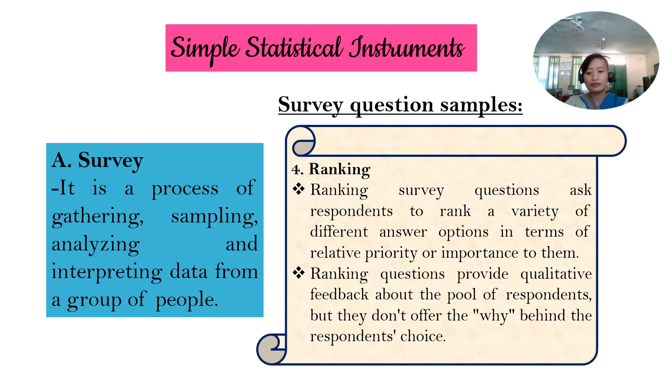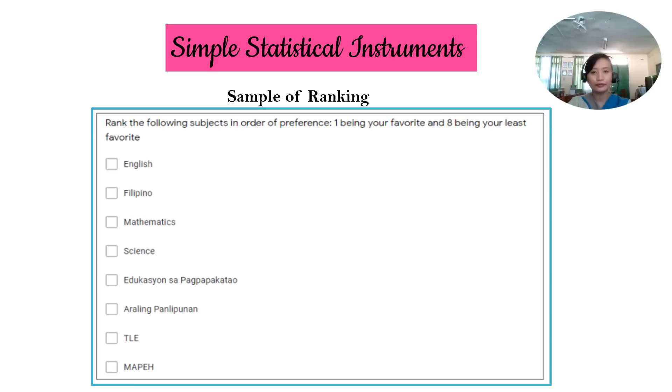And the fourth one, or fourth sample for the example of a survey is ranking. Ranking survey questions ask respondents to rank a variety of different answer options in terms of relative priority or importance to them. Ranking questions provide qualitative feedback about the pool of respondents, but they don't offer the why behind the respondents' choice. So no explanation, you just have to rank.